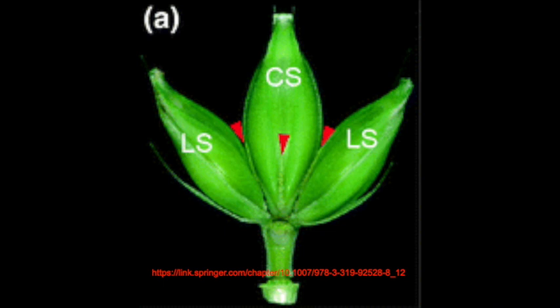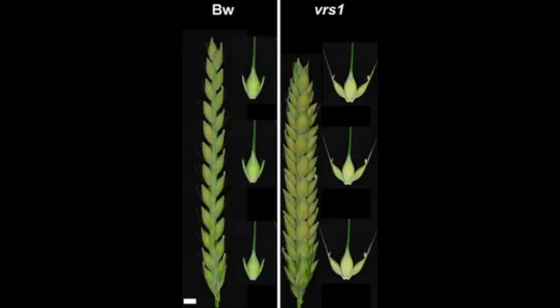We think those rudimentary spikelets may be important for seed dispersal. But shortly after domestication, farmers selected varieties where those lateral spikelets became fertile and set grain. Those types of spikes are called six-row spikes because they have six rows of grain, as opposed to the two-row wild type. Understanding that switch has been an ongoing interest — both from a developmental biology point of view and from an agronomic perspective, since we can get more grain off a barley spike.